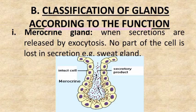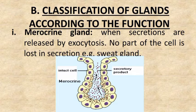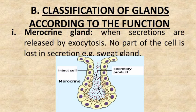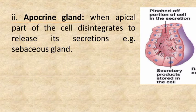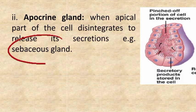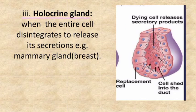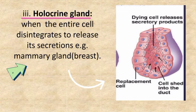According to their functions, glands are classified into three classes. Merocrine glands secrete hormones by exocytosis, in which no part of the cell is lost — for example, sweat glands. In apocrine glands, the apical part of the cell disintegrates to release secretions — for example, sebaceous glands. In holocrine glands, the entire cell disintegrates to release secretions — for example, mammary glands.